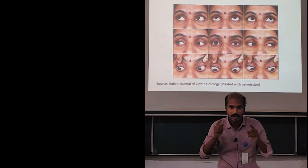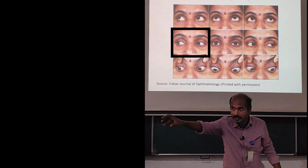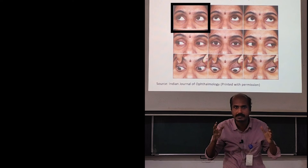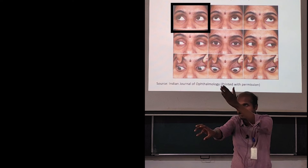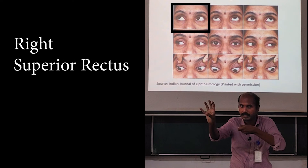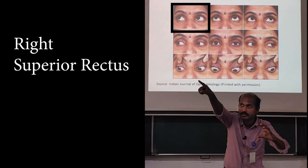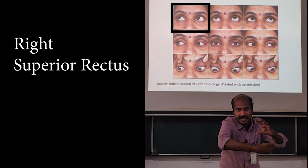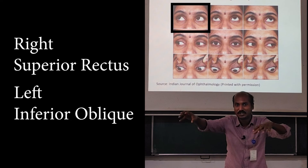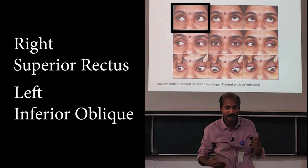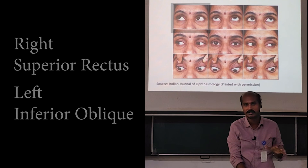Now we will work out which muscles cause a specific movement. From the right position, if I ask the patient to look at the right upper corner, which muscles act? The right eyeball is abducted, so the superior rectus will cause elevation — the right superior rectus brings the right eyeball to the right upper corner. The left eyeball is adducted, so to bring it to that point, the left inferior oblique must contract. So the right superior rectus and the left inferior oblique contract together to cause elevation into the right upper corner. This is the importance of the nine cardinal gaze positions.